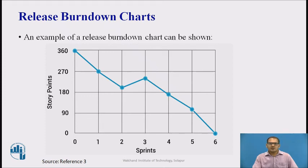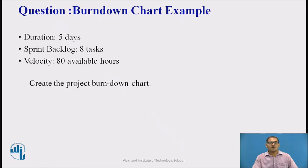This example also shows that in the first sprint, the team used 90 story points with 270 remaining. The second sprint ran smoothly as well. However, as you can see in the chart, something happened during the third sprint and the team burned up their story points. Once they resolved the issues in the third sprint, the project ran smoothly for the remaining sprints.